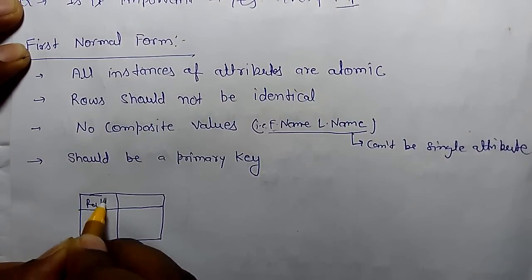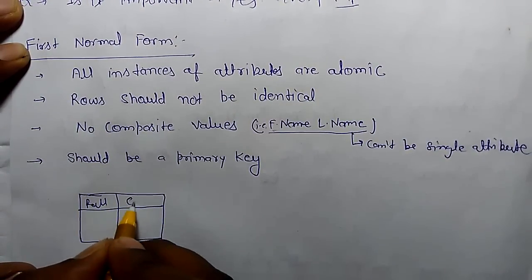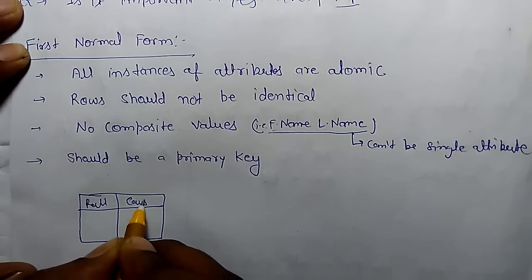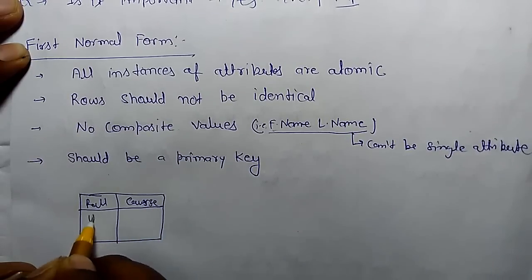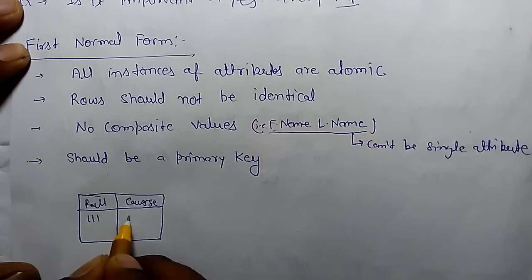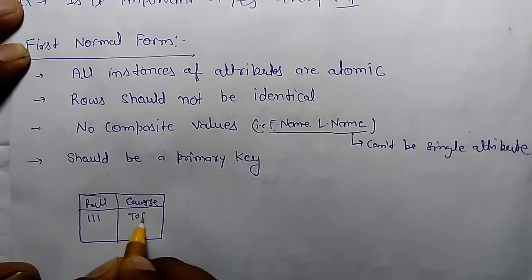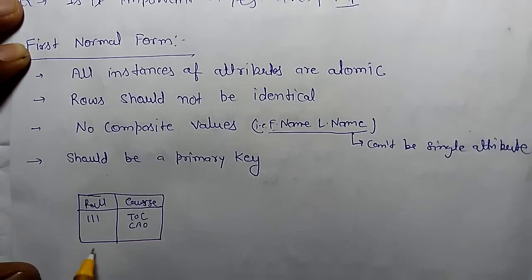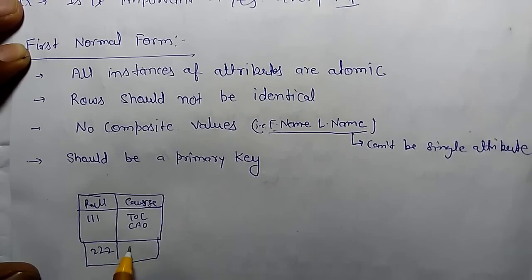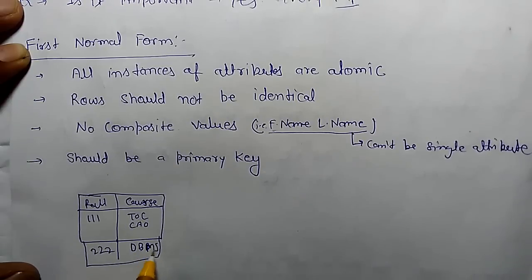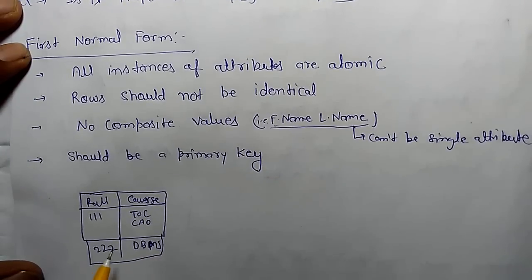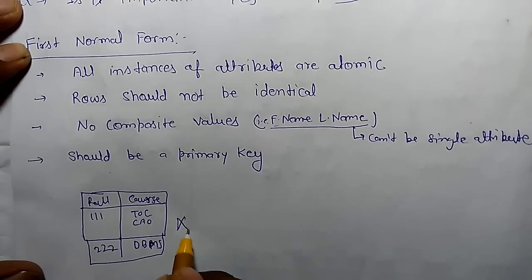For example, there is a roll number and each roll number opts for some course. For example, 111 opted for course TOC and CAO. Next is 222, which opted for DBMS.